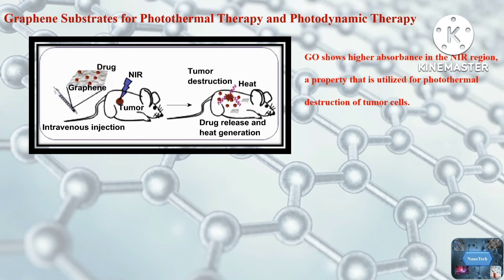Bio-functionalization of graphene with biomolecules such as PEG and FBS improves its biocompatibility and enhances photothermal efficiency. In addition, certain fluorescent dye molecules such as indocyanine green or quantum dots can be conjugated onto graphene to achieve image-guided photothermal therapy.